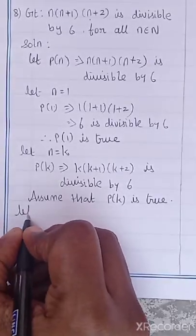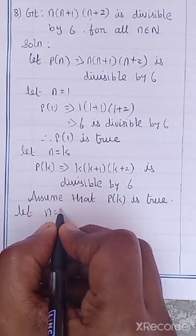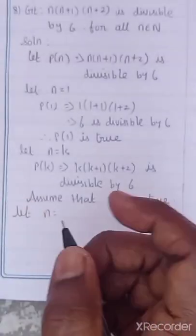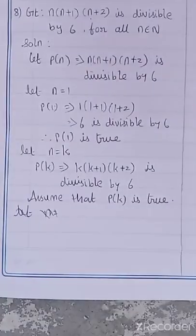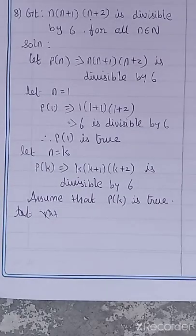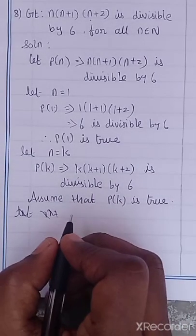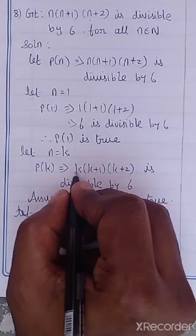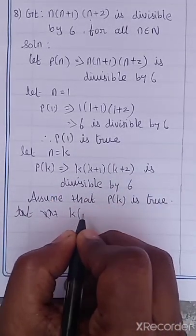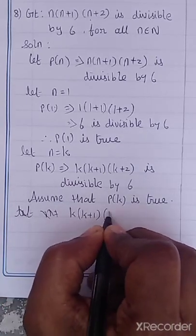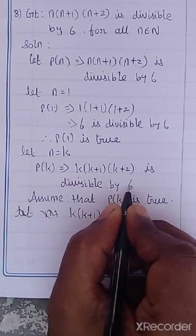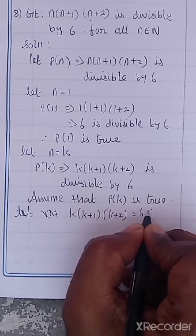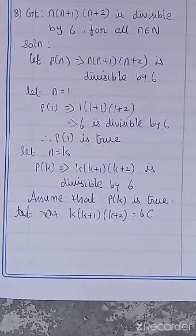What is the last step? Let N equal to K plus 1. Since P of K is a divisibility statement, we can write K into K plus 1 into K plus 2 equal to 6C, where C is a constant. Now we want to prove P of K plus 1 is true.